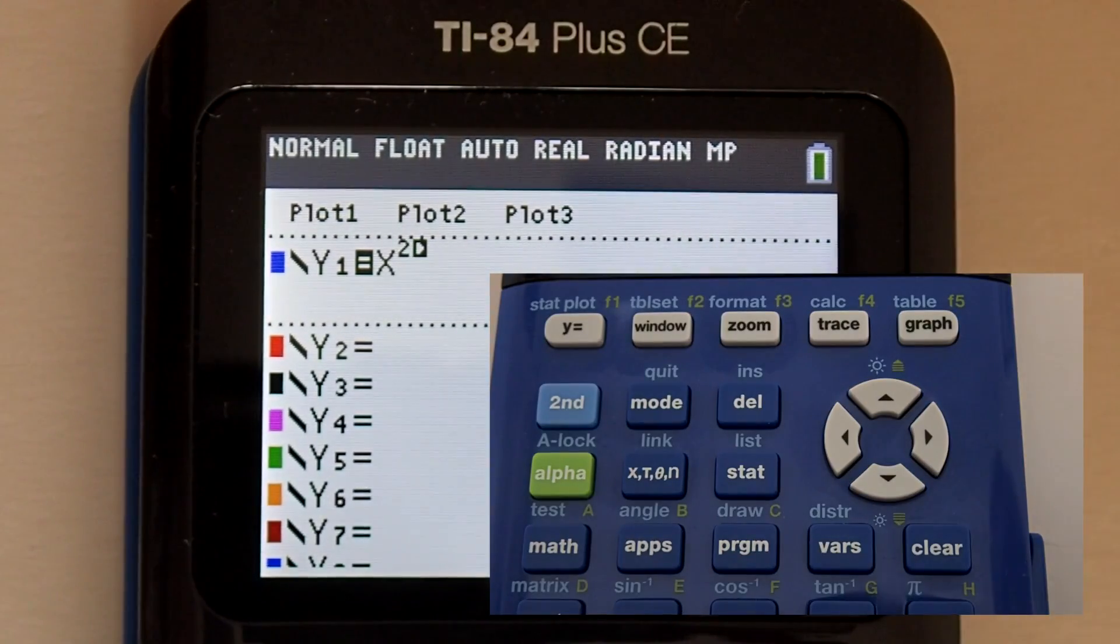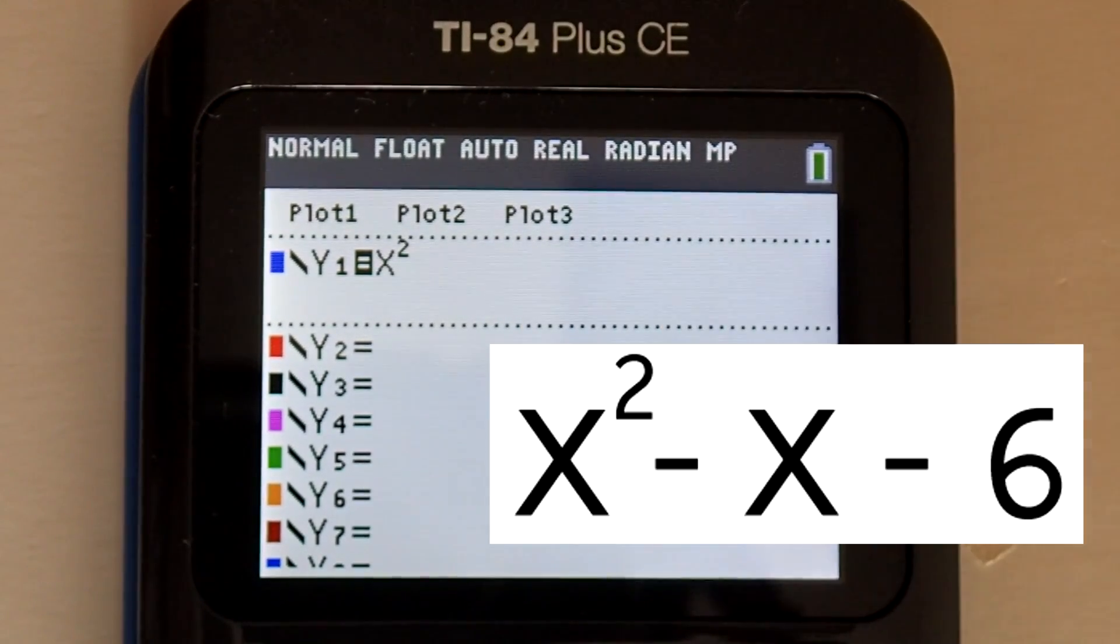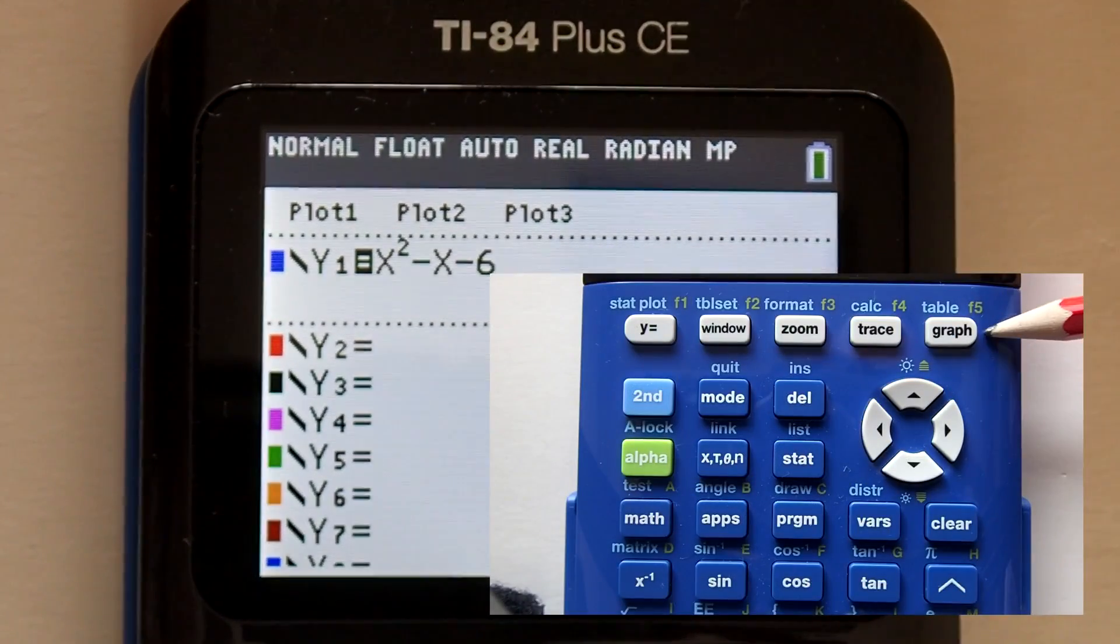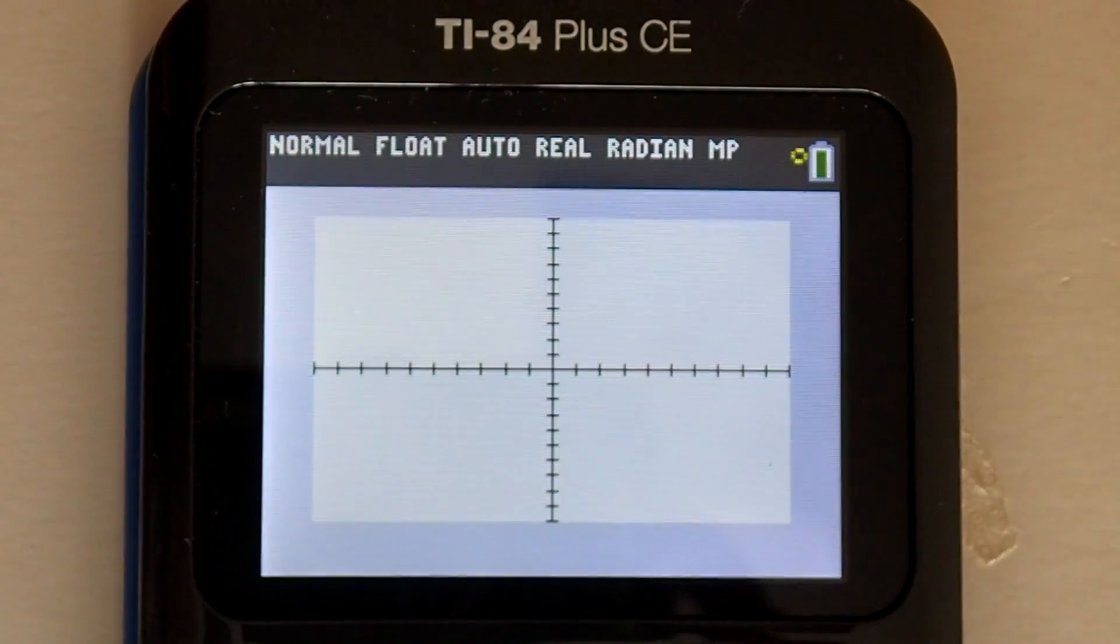To move the cursor out of the exponent position, press the right arrow key here. Then enter the rest of the equation. Minus x, minus 6. Now press the graph key located in the upper right here. You should get this graph.